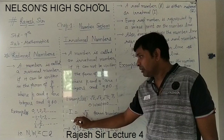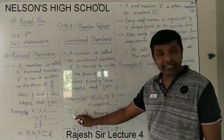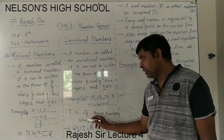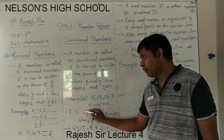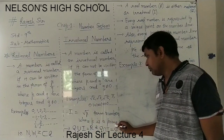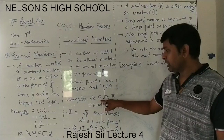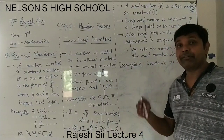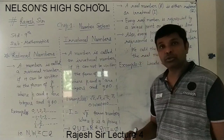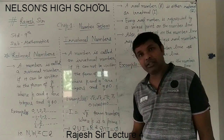Therefore, in general, irrational numbers are denoted by capital I. They will regularly be in the form of root p, where p is a prime. Like root 2 (2 is prime), root 3, root 5, root 7, root 11 — all these types of numbers are called irrational numbers.